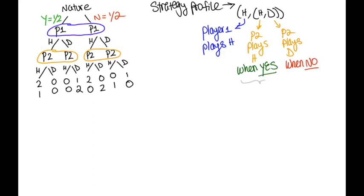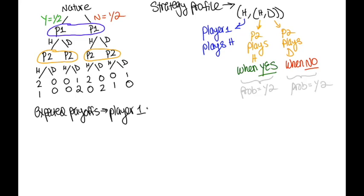To check for best responses, we can calculate each player's expected payoffs based on these strategy profiles. Starting with player 1's payoff, we look at the extensive form of our game and follow the decision nodes, starting with the decision HH as seen when player 2's nature is yes to movies, which gets us a payoff of 2. Since the state of yes happens with a probability of 1 half, we multiply our payoff by that probability.